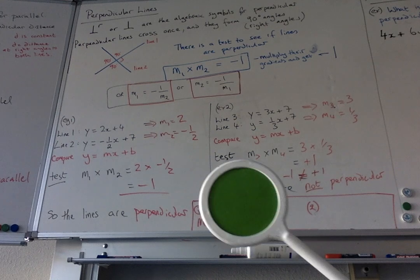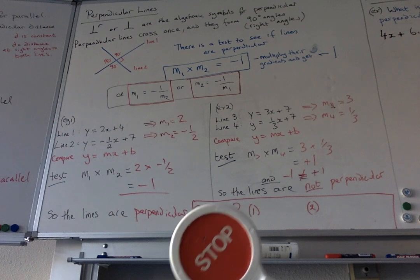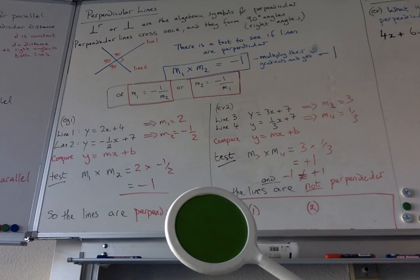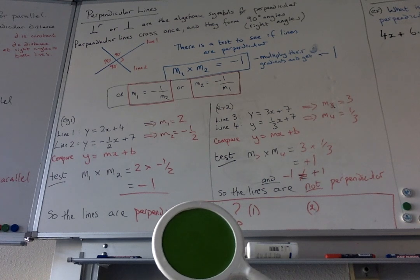So let's see if you can do this one. What's perpendicular to minus 3 quarters? Stop the video. Come back when you know. Minus 3 quarters. What is it perpendicular to? Okay, did you say it was 4 thirds?